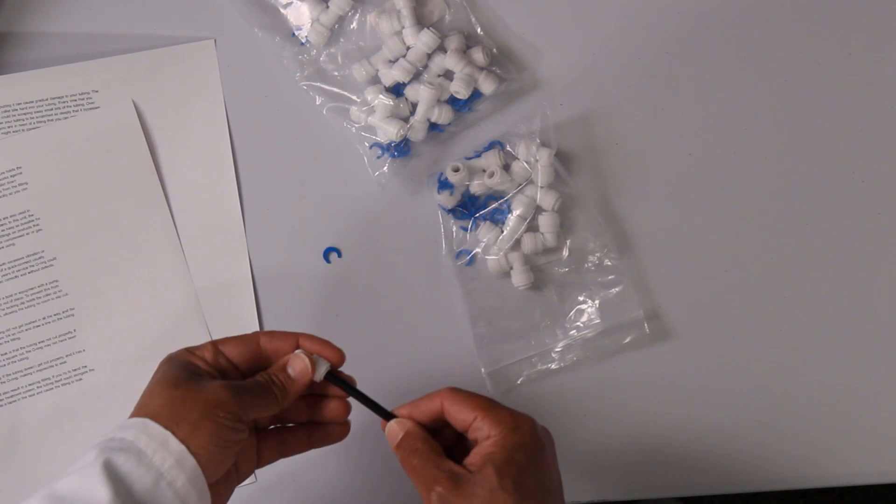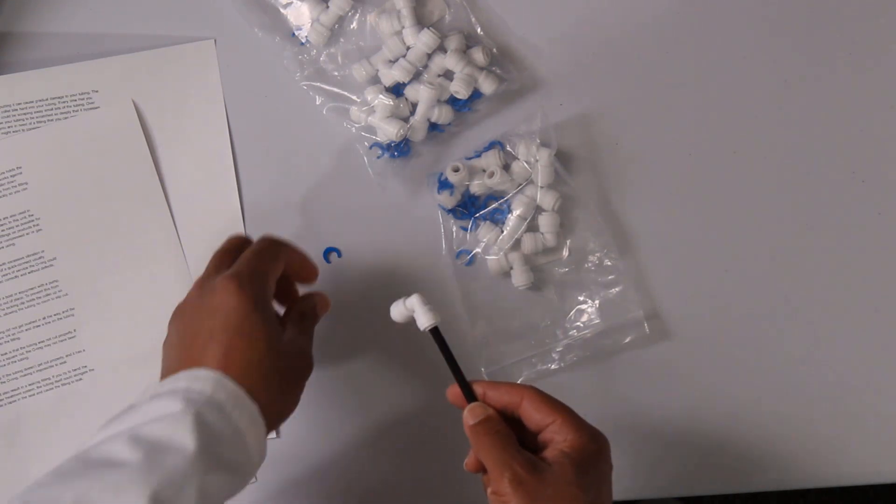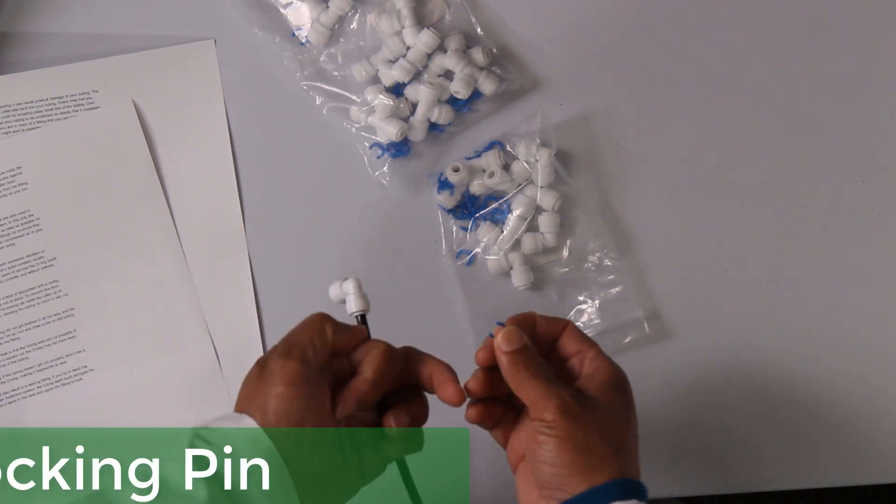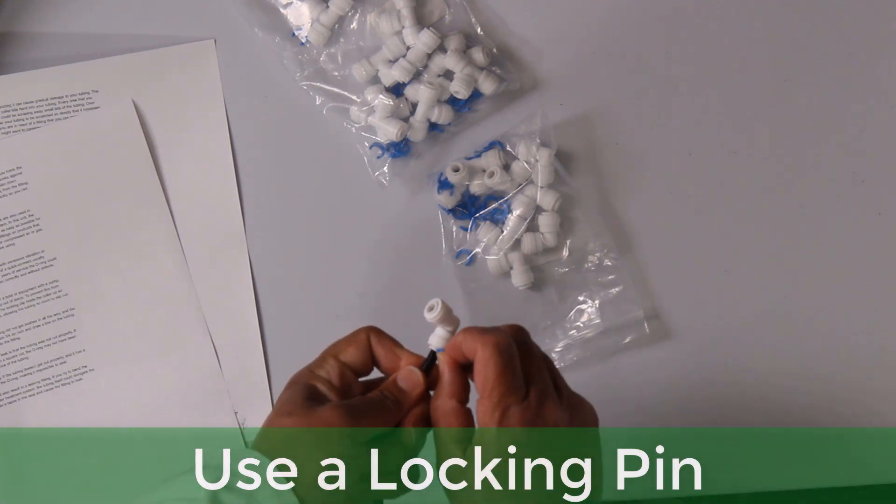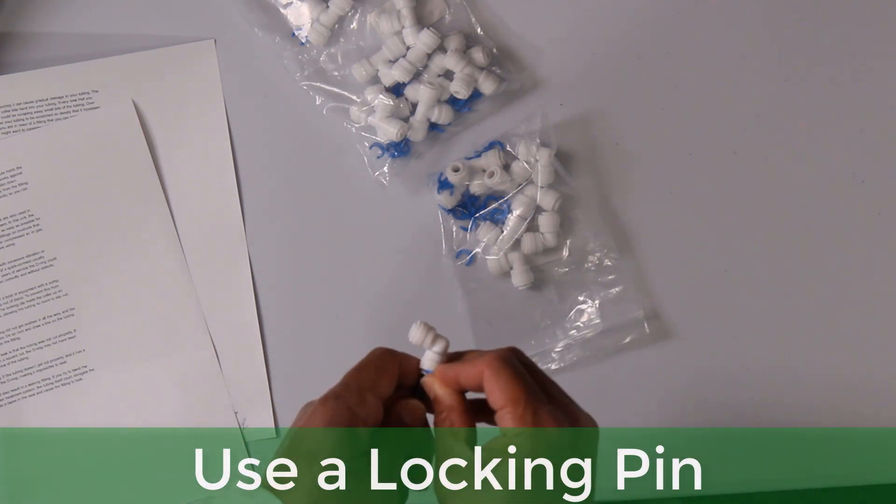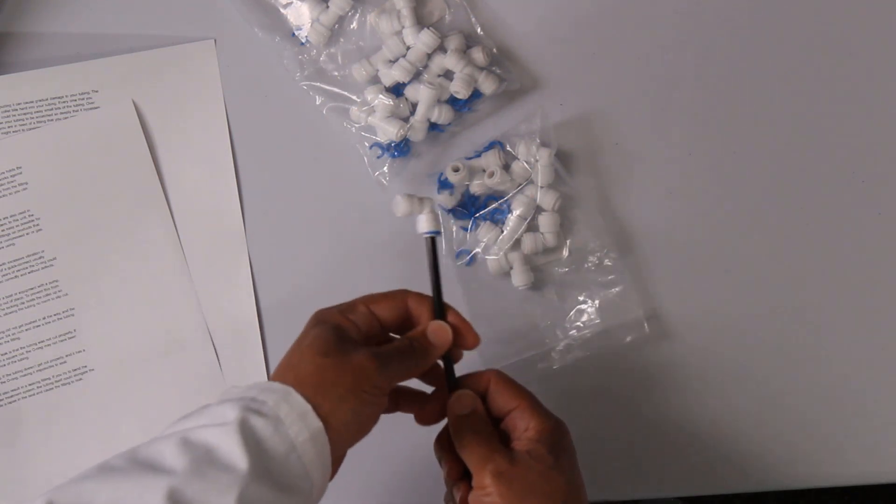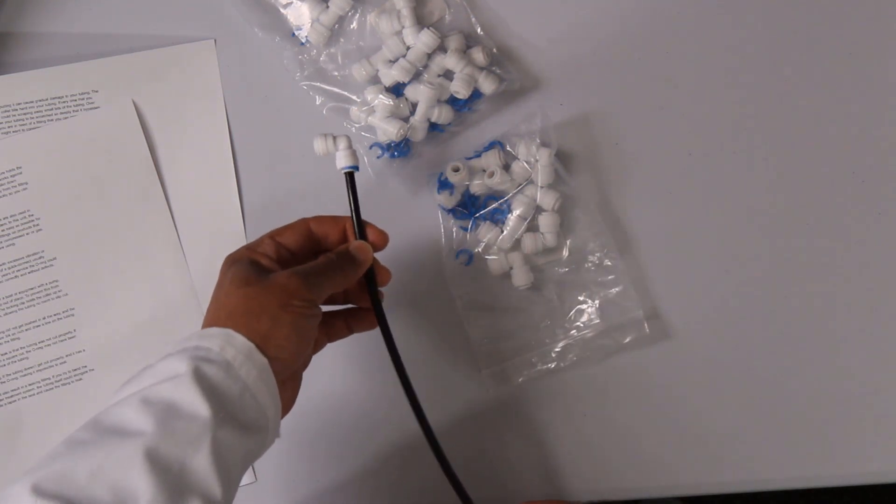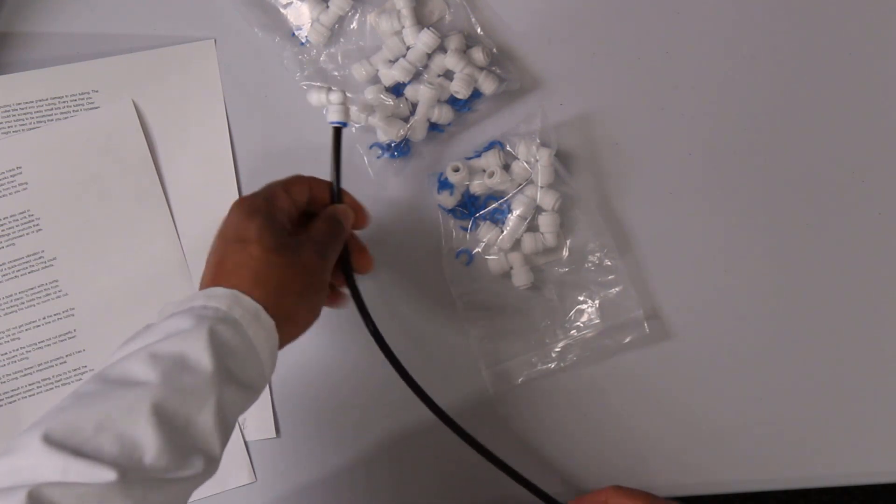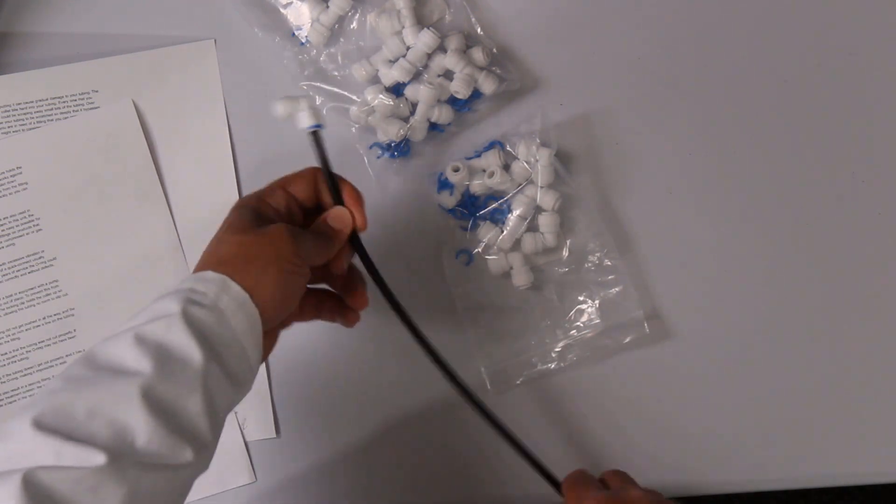So one thing we can do to help minimize the effects of vibration is be sure to insert it all the way in, use a locking pin to ensure that the tubing is secure to the fitting. And another thing is that if this is tied to a motor and we're getting a lot of vibration,